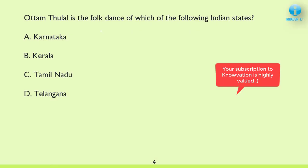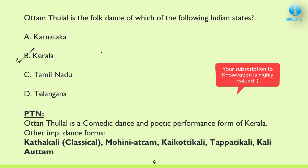Next: Uttam Thulal is the dance form of which of the following Indian states? The correct answer is B — Kerala. Uttam Thulal is a comedic dance form and also a poetic performance form of Kerala. Important dance forms from Kerala include Kathakali, a very important classical dance form, and Mohiniyattam.